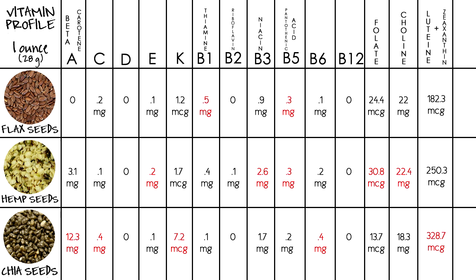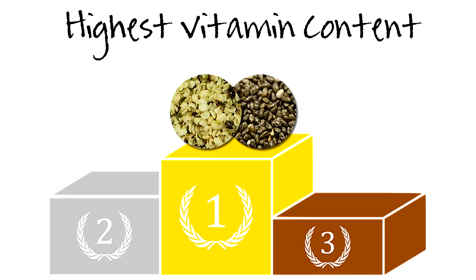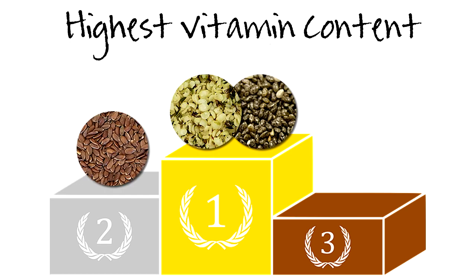I've marked in red which seed has the highest value for each nutrient. This takes us to our winner's platform for highest vitamin content: hemp seeds and chia seeds tie for first, and flax seeds take second. Not one seed was really dominant over the other — if this were a sporting event, it would have been a photo finish for all three.